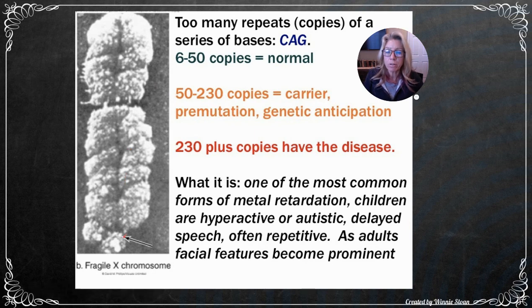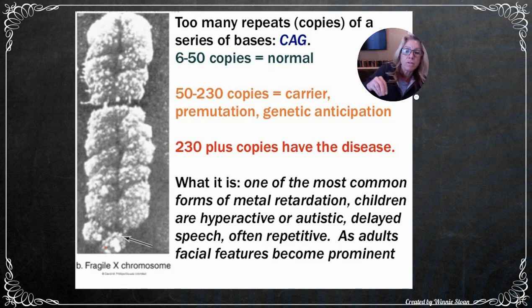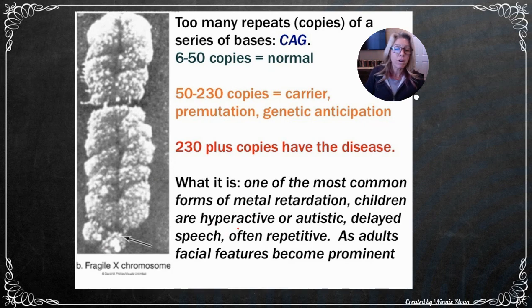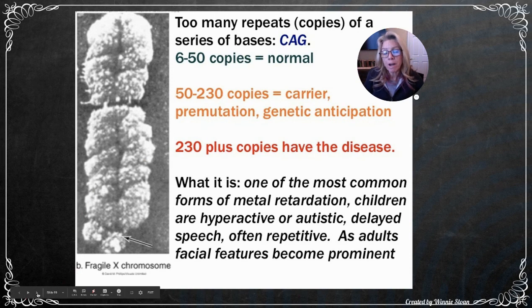Fragile X syndrome is an X-linked condition where repeating copies of certain nucleotides (CAG repeats) cause a portion of the X chromosome to appear as if it will fall off. It's one of the most common forms of intellectual disability. Children are either hyperactive or autistic, with delayed speech and slightly different facial features. Whether you are male or female influences the severity.